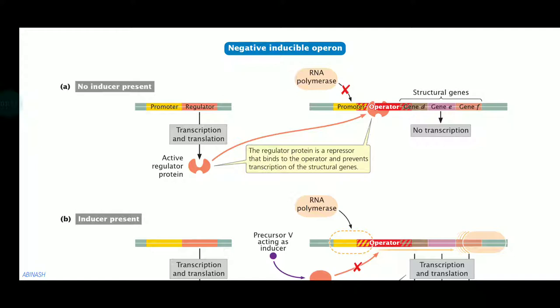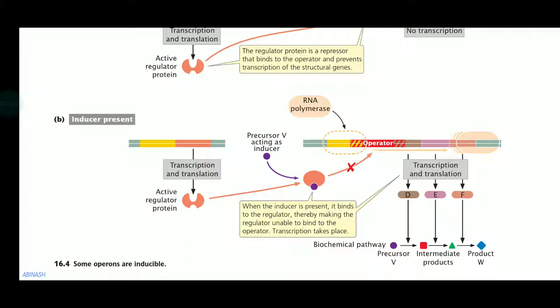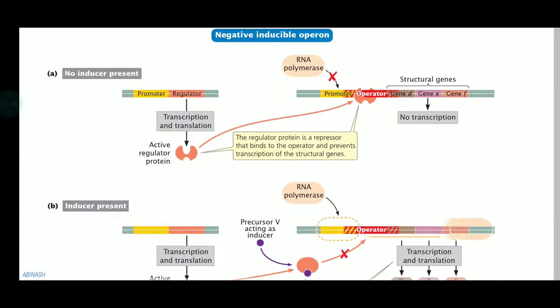When there is no lactose, no enzyme is required, so there will be no production of those proteins. When lactose — what we call allolactose — is produced when there is an increased concentration of lactose, this causes binding with the repressor protein. That binding with the inducer will not allow the repressor to bind with the operator region, and that permits this kind of transcription and translation.